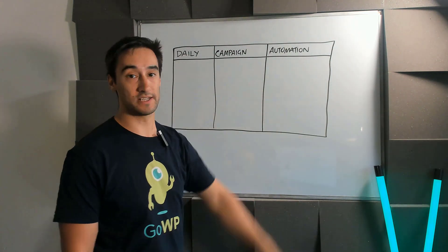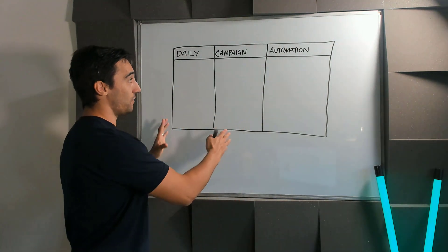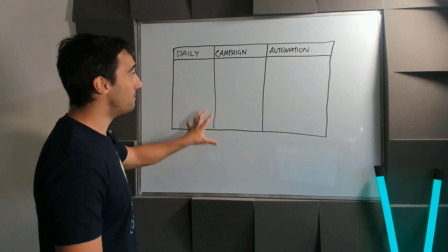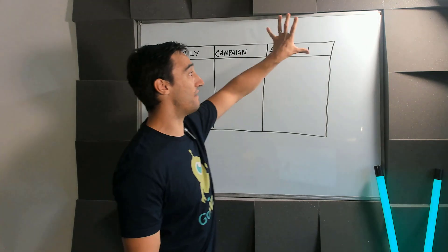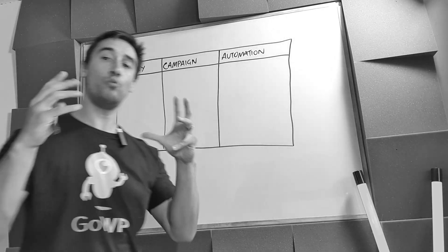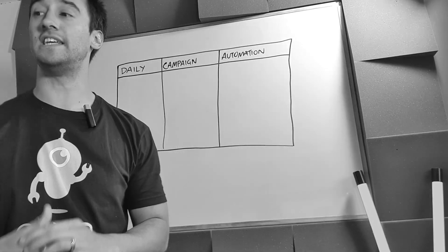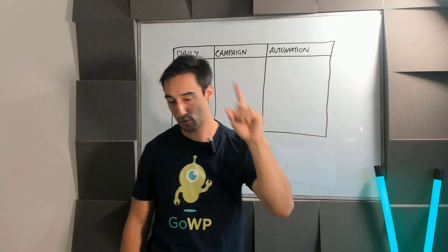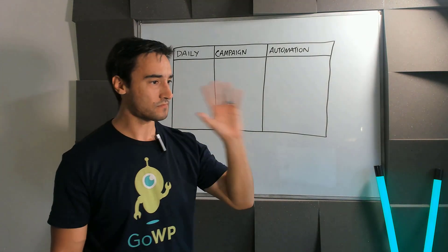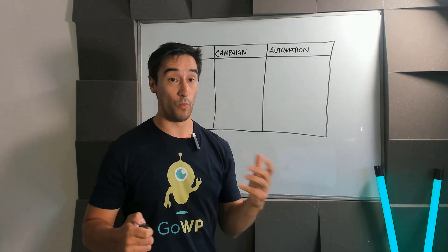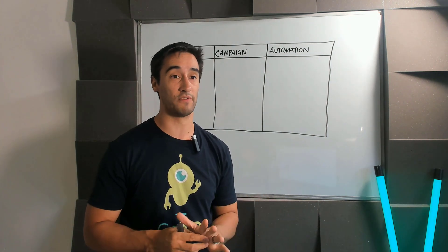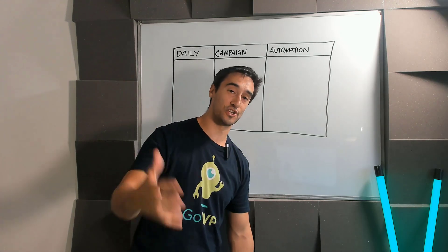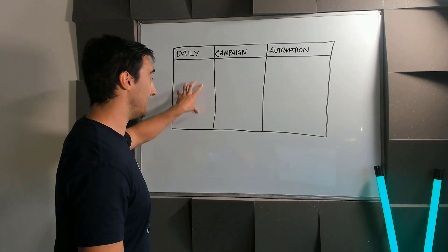The first thing we want to do is split our emails up into three segments: daily email, campaigns, and automation. What you want to get comfortable with first is knowing you're going to have to start testing stuff — even if you're a small one-person business, a tiny team of two or three people, a micro business, or if you're working with a larger company.